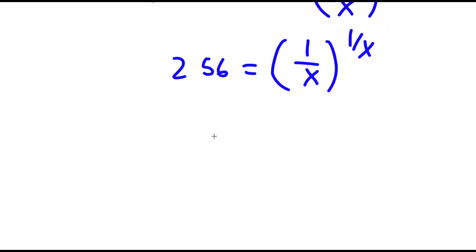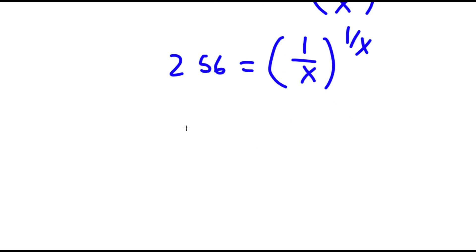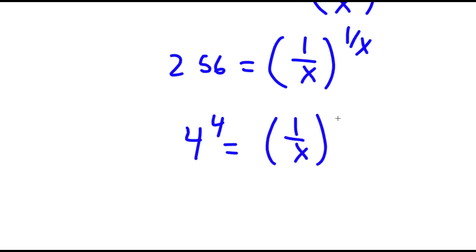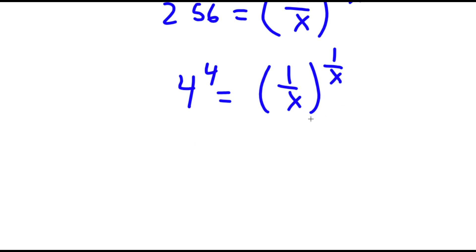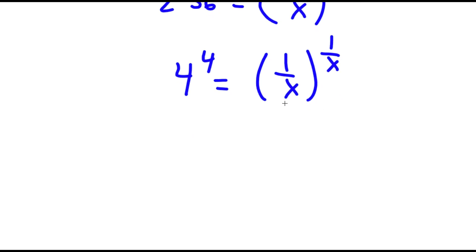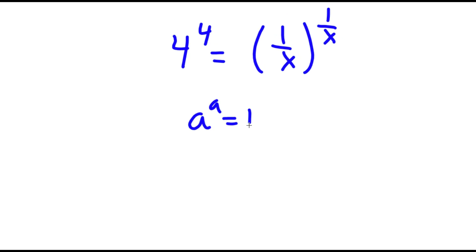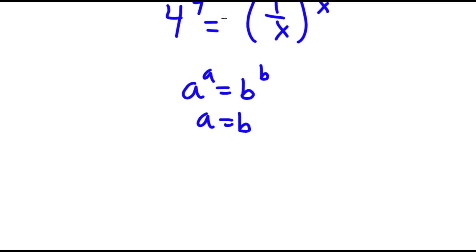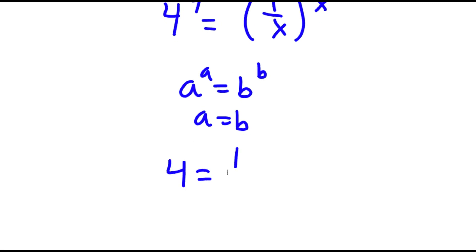And 256 is the same thing as 4 to the power of 4. So I have 4 to the power of 4 is equal to 1 over x to the power of 1 over x. Now if I have something in the form a to the power of a is equal to b to the power of b, this means that a is equal to b. So in this case, 4 is equal to 1 over x.